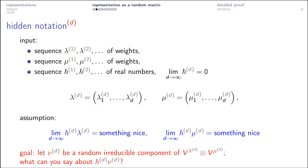Now ν_d is a random irreducible component of this tensor product appearing in the Littlewood-Richardson decomposition, and our problem is: what can we say about ℏ times ν? The number d appears everywhere, which is a bit annoying, so to keep the notation light I decided to write d in gray font — from now on you won't see it explicitly, but we should keep in mind it is there. We are considering the limit as d tends to infinity.